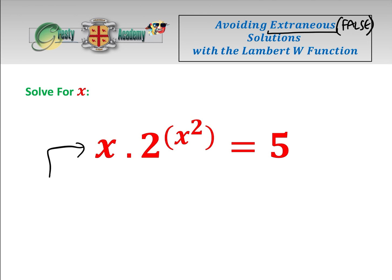First of all, x squared is always positive and 2 is positive, so this must be positive, and we know that 5 is positive. Therefore, any solution to x must be positive, and so we can already avoid any false solutions by only taking positive values of x.